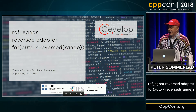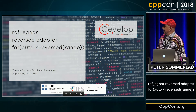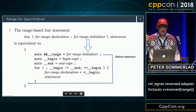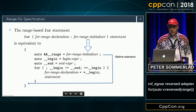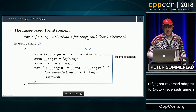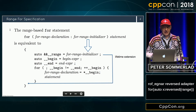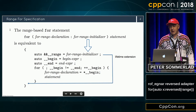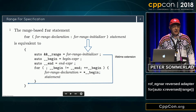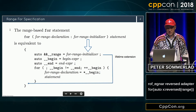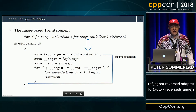The big red button. Reversing range-for — that's a standard definition of range-for. And fortunately, it's defined in a way that we have lifetime extension, so we can actually iterate over a temporary on the right-hand side of the colon of the range-for, which is a good thing to have.